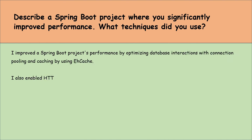Explain the difference between cache eviction and cache expiration. Cache eviction is when data is removed from the cache to free up space based on a policy like least recently used (LRU). Cache expiration is when data is removed because it's too old, based on a predetermined time-to-live (TTL). So eviction manages cache size while expiration ensures data freshness.